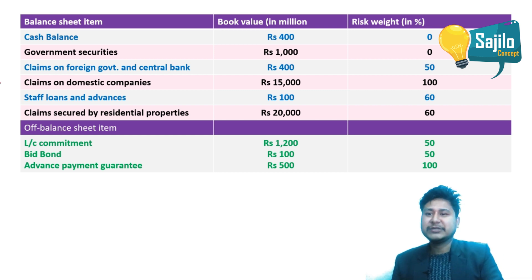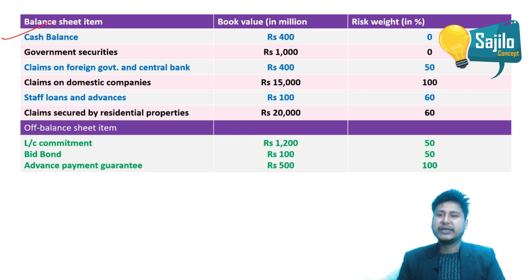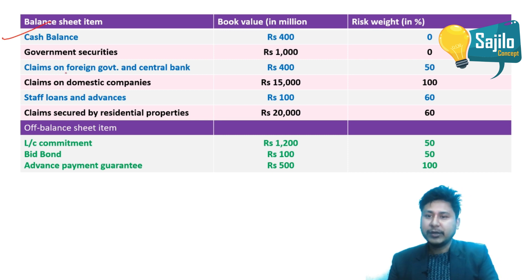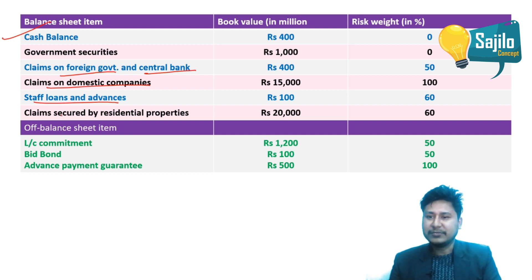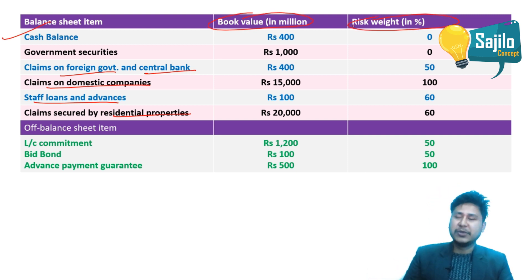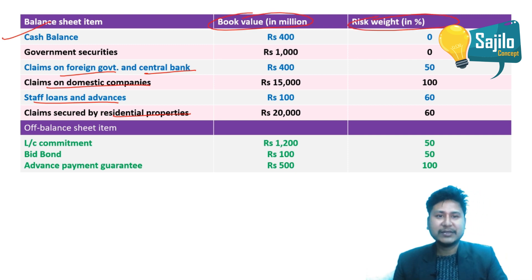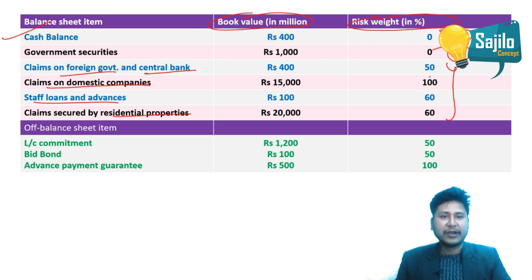Looking at the balance sheet items: cash balance, government securities, claim on foreign government and central bank, claim on domestic companies, staff loan and advance, claim secured by residential property — each has a book value and a corresponding risk weight. For example, cash balance has a risk weight of 0% (i.e., 50% applied in the weighted calculation).